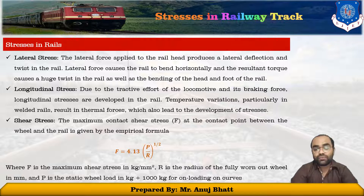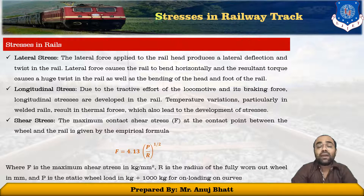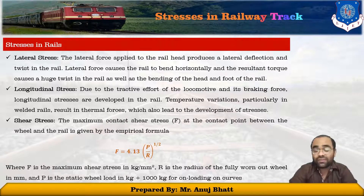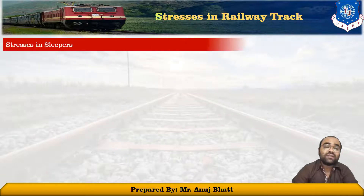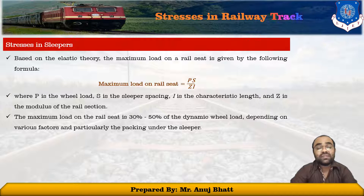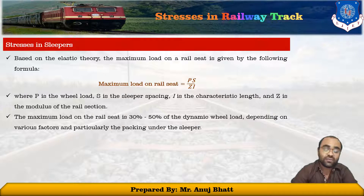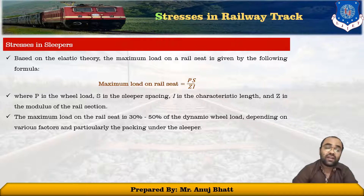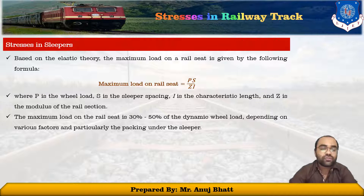Third is shear stress. The maximum contact shear stress at the contact point between the wheel and the rail is given by f = 4.13 × (p/r)^(1/2), where f is the maximum shear stress, r is the radius of the wheel, and p is the stated wheel load. Next are stresses in sleepers. Based on elastic theory, the maximum load on the rail seat is given by p·s / (z·l), where p is the wheel load, s is the sleeper spacing, l is the characteristics length, and z is the modulus of rail section. Maximum load on the rail seat is 30 to 50 percent of the dynamic wheel loads depending on various factors, particularly packing under the sleepers. This loading gives rise to end-bound sleepers and center-bound sleepers.